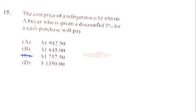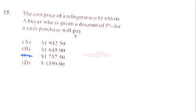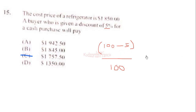Question 15: The cost price of a refrigerator is 1850 dollars. A buyer who is given a discount of 5 percent for a cash purchase will not pay 100 percent but will pay 100 minus 5 percent, because the discount has to be subtracted. So we calculate 95 over 100 times the price of the refrigerator, which is 1850 dollars.